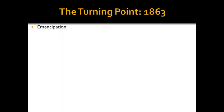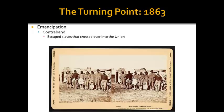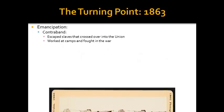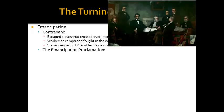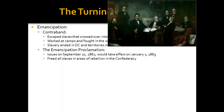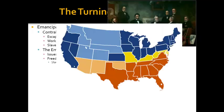1863 is a very important turning point year in American history. Contraband is a term used for escaped slaves that crossed over into the Union and remained free — they worked at camps and fought in the war. Slavery ended in Washington, D.C. and territories in 1862. On January 1, 1863, the Emancipation Proclamation took effect, freeing all slaves in areas of rebellion in the Confederacy — only areas that were still fighting. So New Orleans and Tennessee, which were under Union control, did not see slaves freed there. Slaves were also not freed in border states, because Lincoln feared the border states would then secede and fight on behalf of the South.